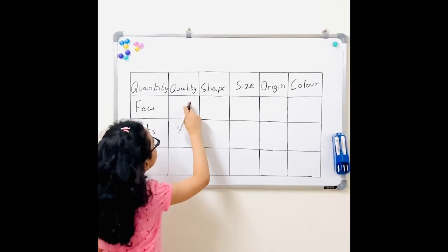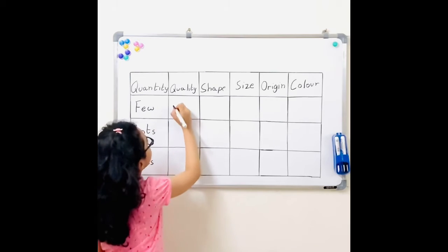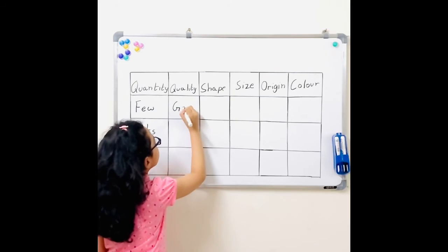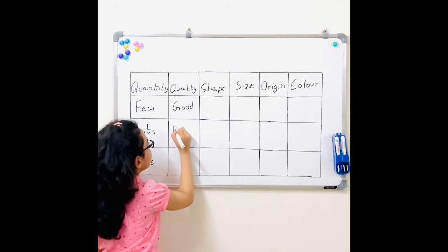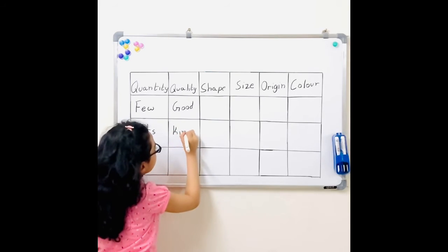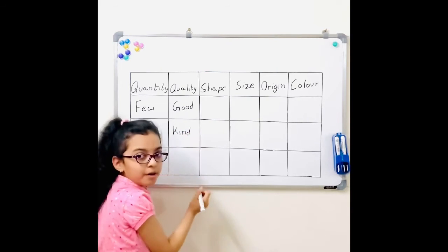For quantity, it could be a few, lots, and less. Now coming to the quality. It could be good, kind, or rude.